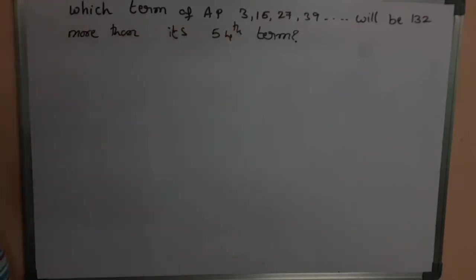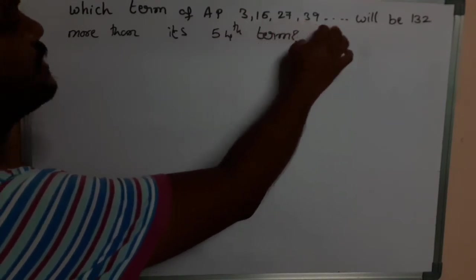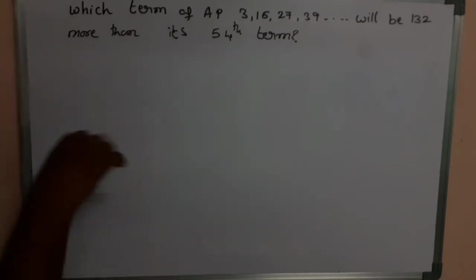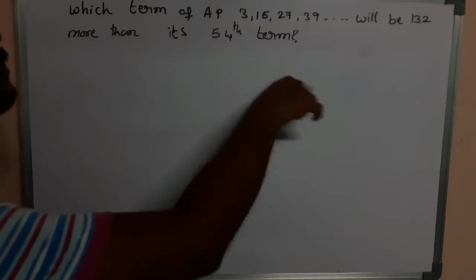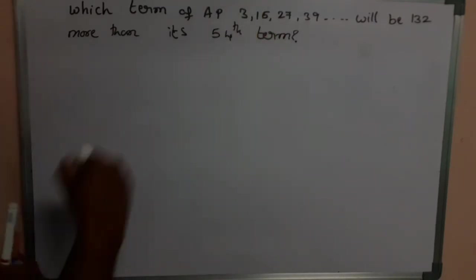Which term of an AP 3, 15, 27, 39, and so on will be 132 more than its 54th term? Which term of this AP will be 132 more than its 54th term? Okay, so let us observe.